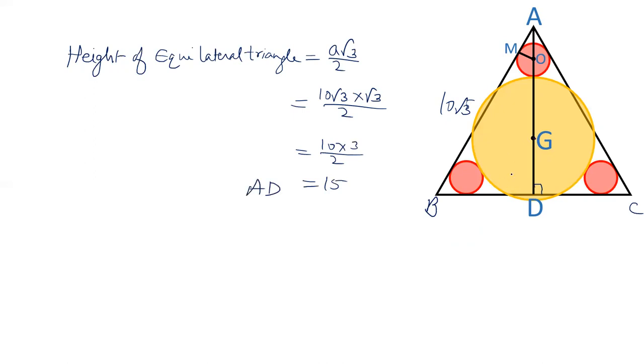And G is centroid, and centroid divides the median in the ratio of 2 is to 1. AG and GD are in the ratio of 2 is to 1. So AG will be 2/3 of AD. That is 2/3 × 15, which is 10 centimeters. The length of AG is 10 centimeter.